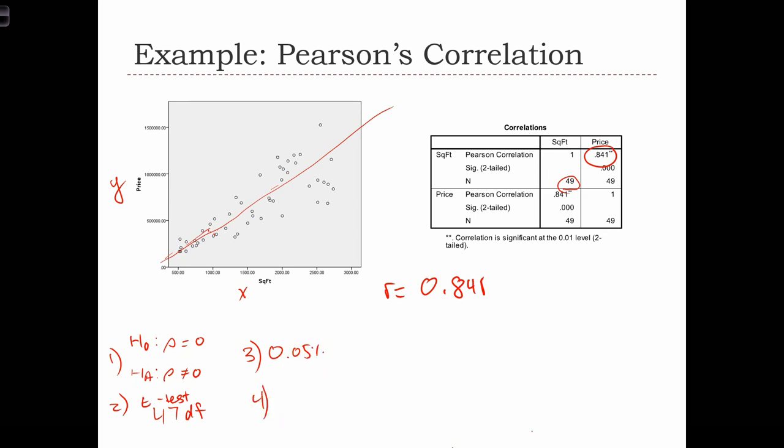Step 4 would be to calculate this R. The computer is doing it for us at 0.841, but we could have calculated the covariance and standard deviations and computed R by hand. That's actually step 5. Step 4 is to define the zone of rejection. Since we're using a normal test with 5% significance, we want critical values with 2.5% in each tail.